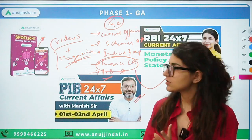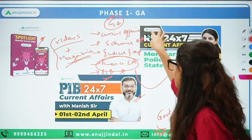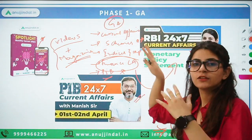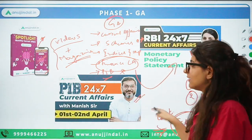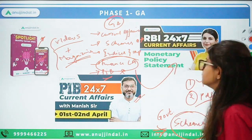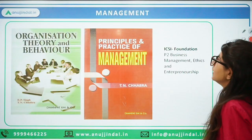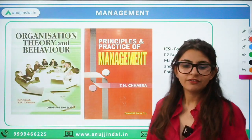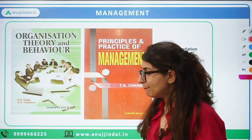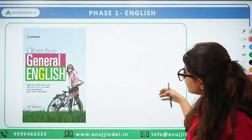So for GA, the sources are: Spotlight magazine, RBI 247 session documents you get on Telegram, PIB 247 videos and documents. Then we have Management, which is in Phase 2. In Phase 2 there are three broader subjects: Management, Finance, and ESI.